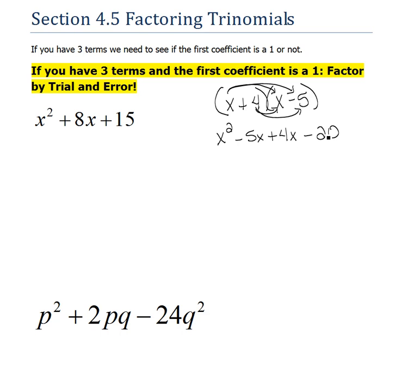Now, once we get to this stage, we would combine like terms. So, we would have x squared minus 5 plus 4 would be minus 1x, we don't have to write the 1, minus 20. Alright, this is what happens when we multiply binomials and we get the trinomial, the product.